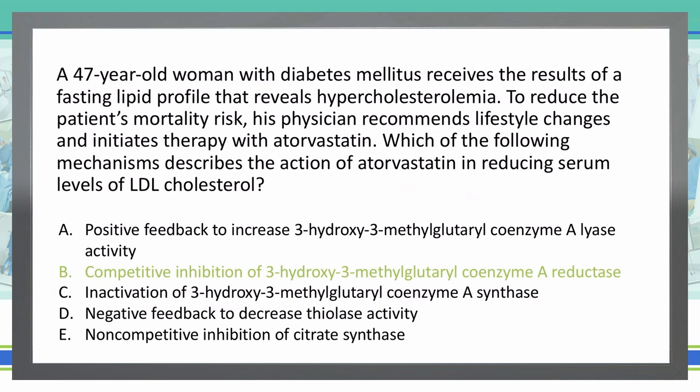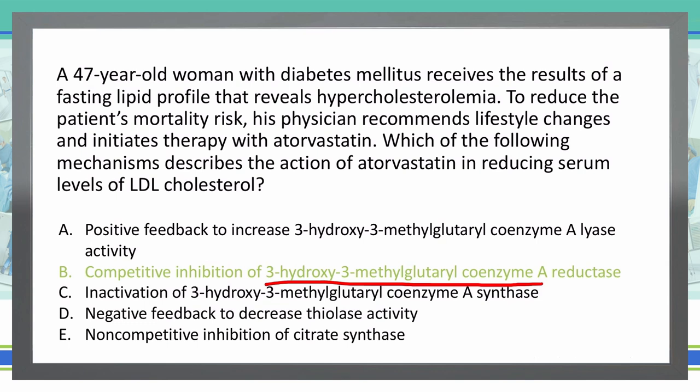3-hydroxy-3-methylglutaryl coenzyme A reductase inhibition — HMG-CoA reductase — catalyzes the rate-limiting step in synthesizing cholesterol. If we can block that, we decrease cholesterol synthesis. That enzyme converts HMG-CoA into mevalonic acid, which is the precursor to cholesterol. So by blocking that step, we block cholesterol production because we don't have the mevalonate.